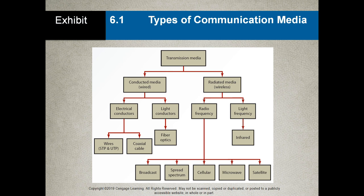Here is a breakdown of the different transmission media. On the right we have radiated media or wireless — this can be either radio frequency signals or light. Infrared is used when you use your remote control with your TV or DSTV decoder. You can test a remote by pointing your phone camera at it and pressing buttons — you'll see the LED flash white because the phone camera can detect infrared light that the human eye cannot see.